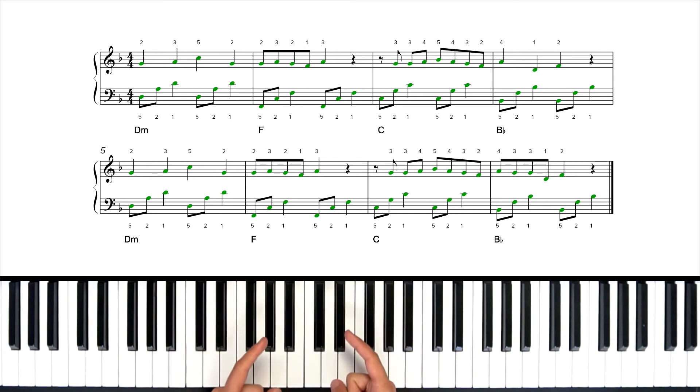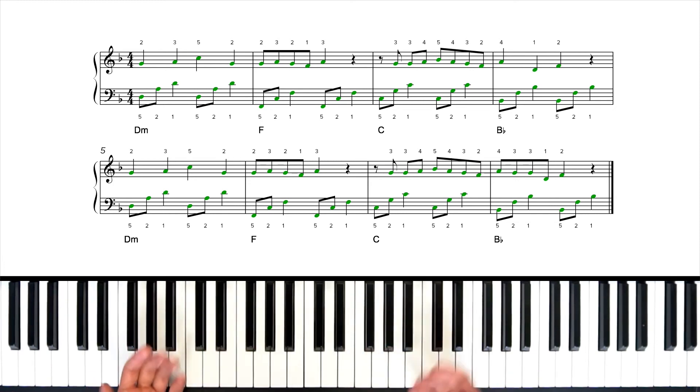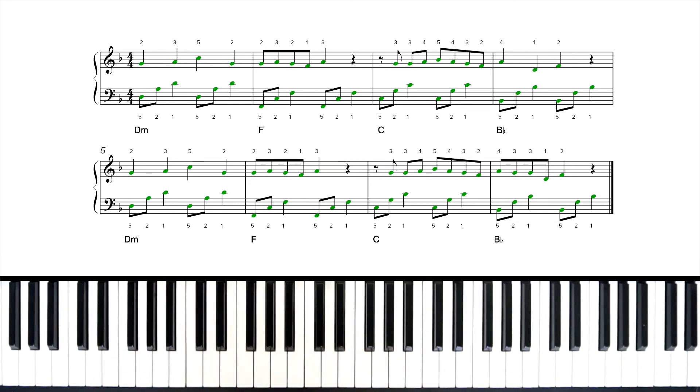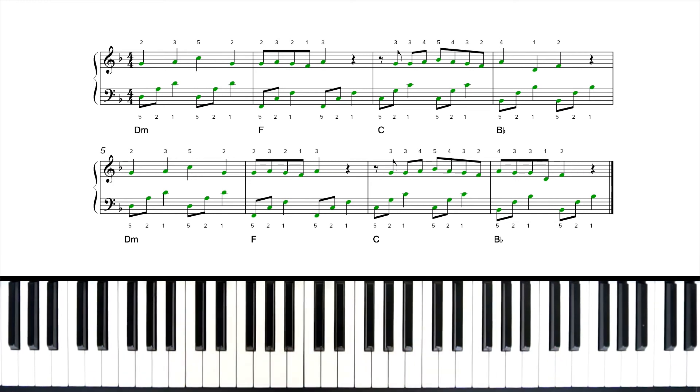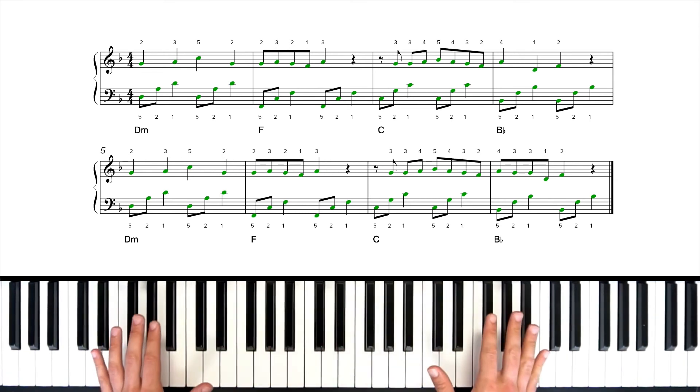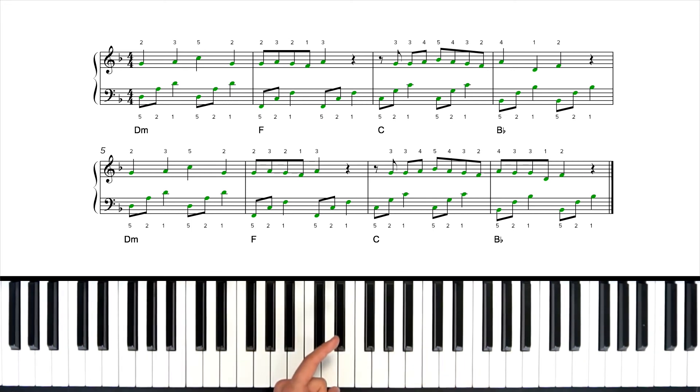Alright so we're almost there guys. All we need to do is put this together at full tempo which is 120 beats per minute. But first let me tell you where to go next. Once you finish with this section there's a ton more to this song. There's verses, there's a bridge, there's another chorus that you put them all together at the end for the whole song. All that stuff still left to do.